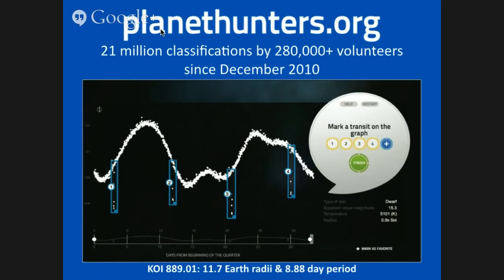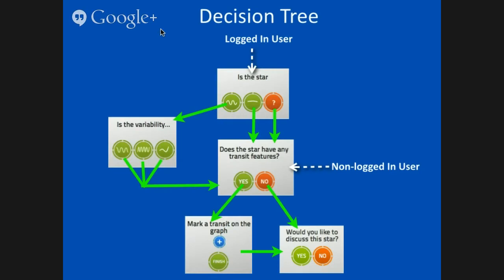Maybe we can do the needle in the haystack and look for transits. You can see here, this guy right here, and your eye is really drawn to it. We saw that one and knew what we wanted to do with the data. Planet Hunters launched in December of 2010. This is what our interface looks like. Since it launched, we've had over 280,000 volunteers, logged in and non-logged in, have done 20 million classifications, where a classification is coming to the interface and assessing a 30-day segment of a Kepler light curve.